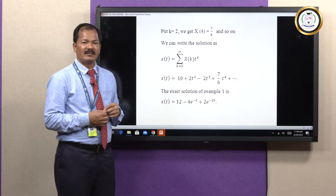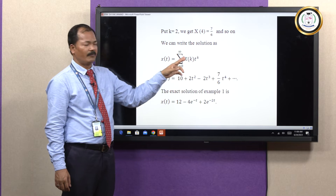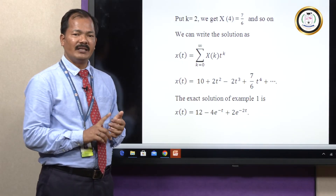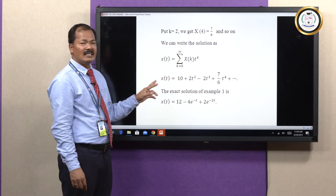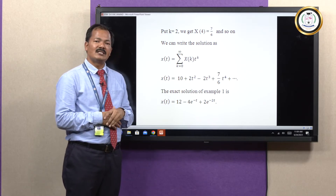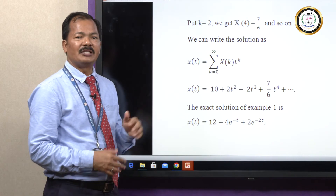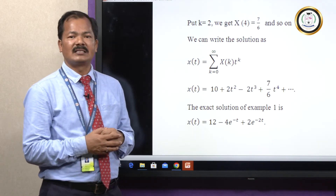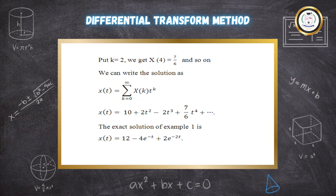We write the final series solution as X of t equals summation from k equals 0 to infinity of capital X of k times t to the power k. Substituting X of 0, X of 1, X of 2, X of 3, X of 4 and so on, we get X of t equals 10 plus 2t-squared minus 2t-cubed plus 7 upon 6 t to the power 4, and so on. This is the differential transform or power series solution. The same equation solved by analytical methods or Laplace transform gives the exact solution: X of t equals 12 minus 4 e to the power minus t plus 2 e to the power minus 2t.